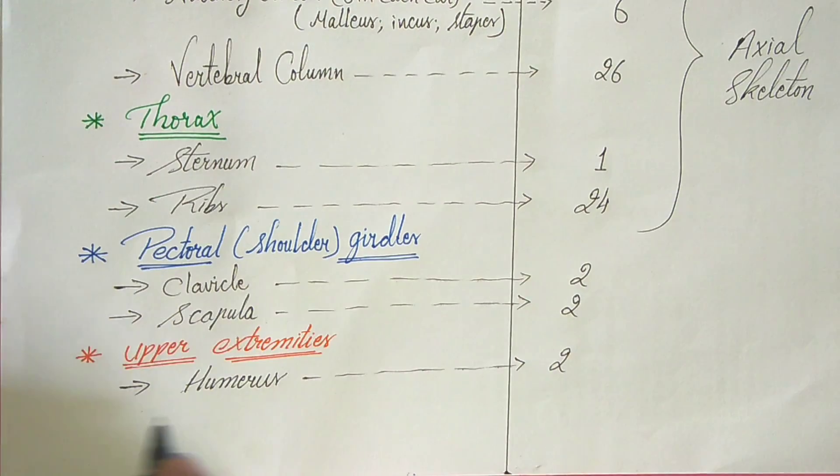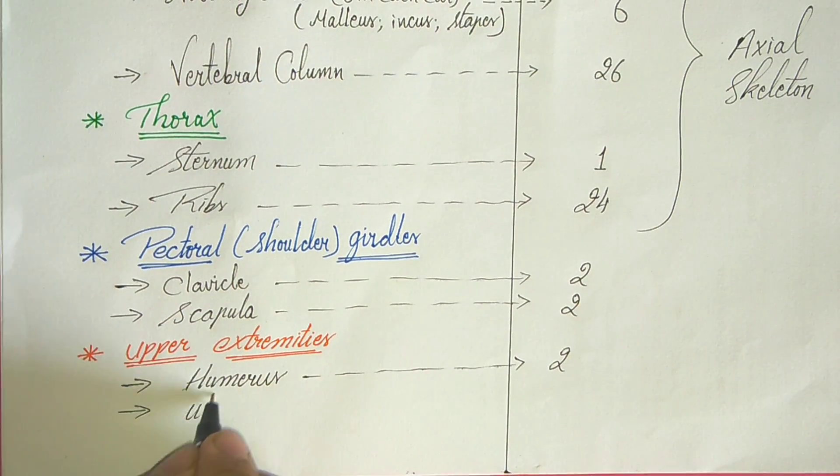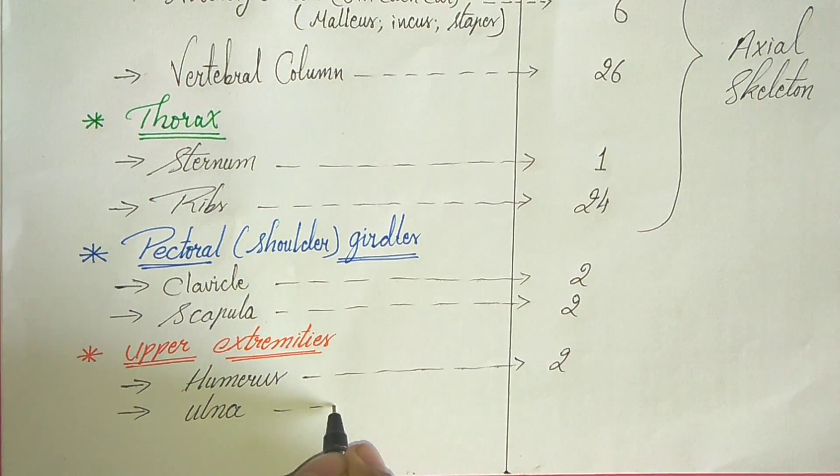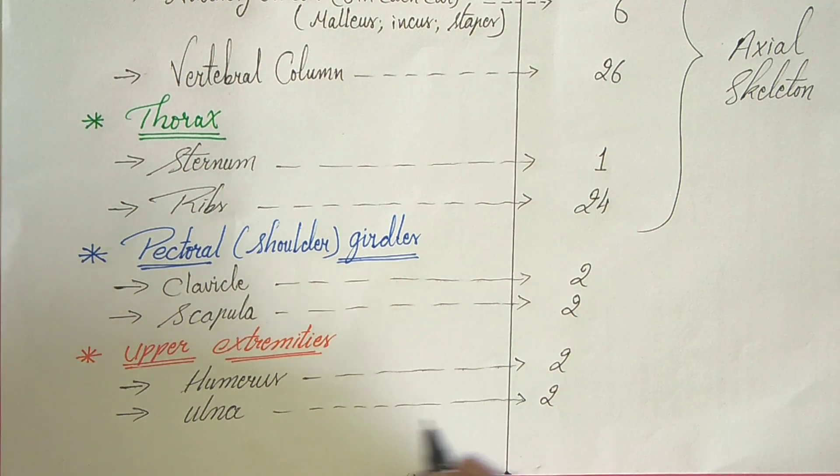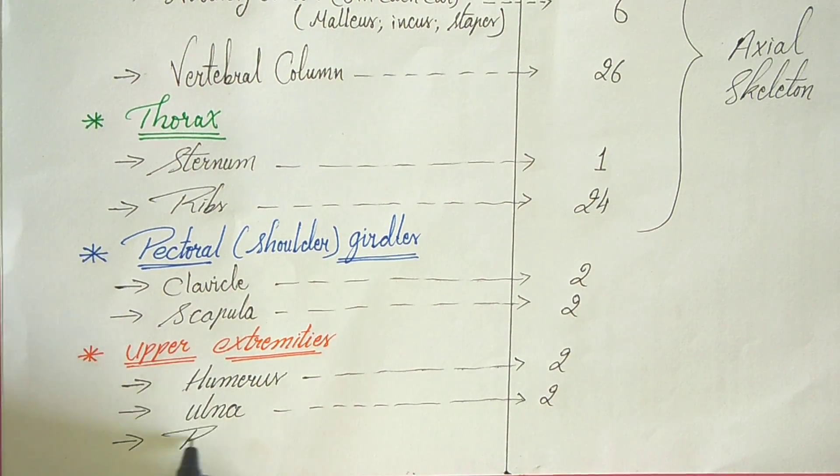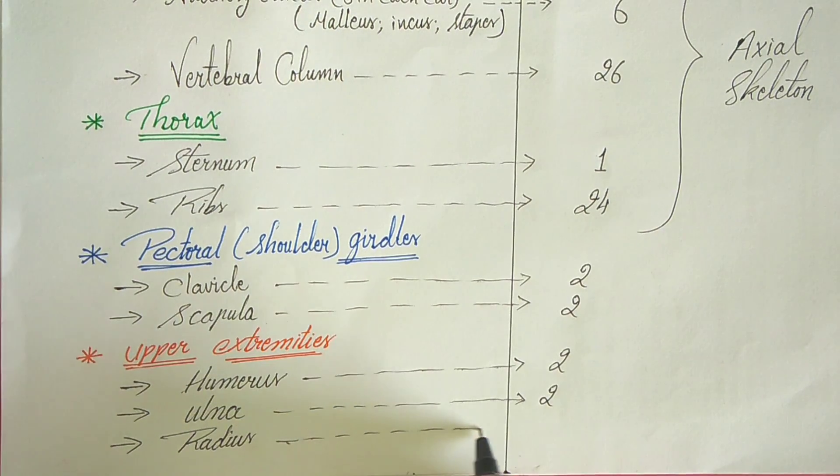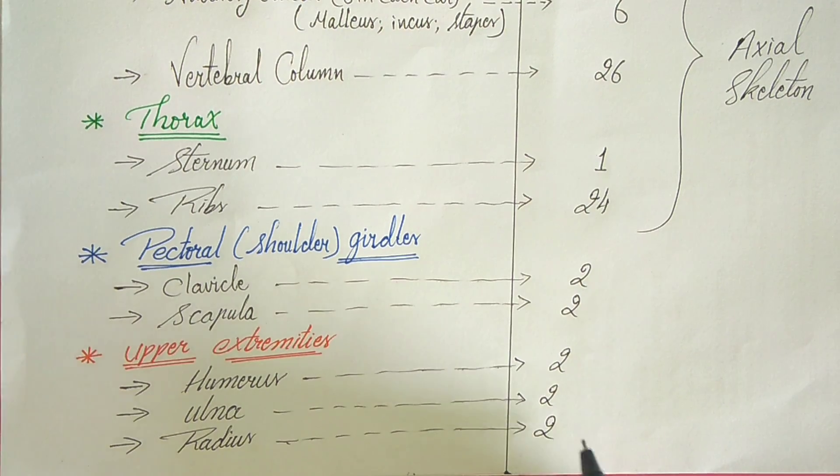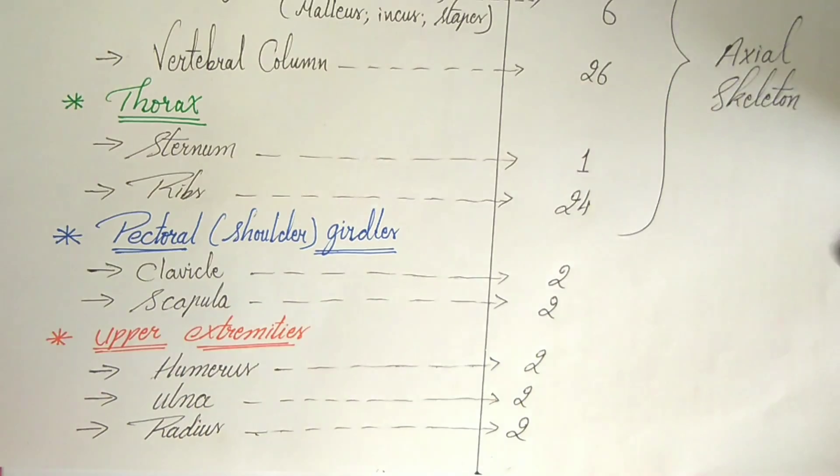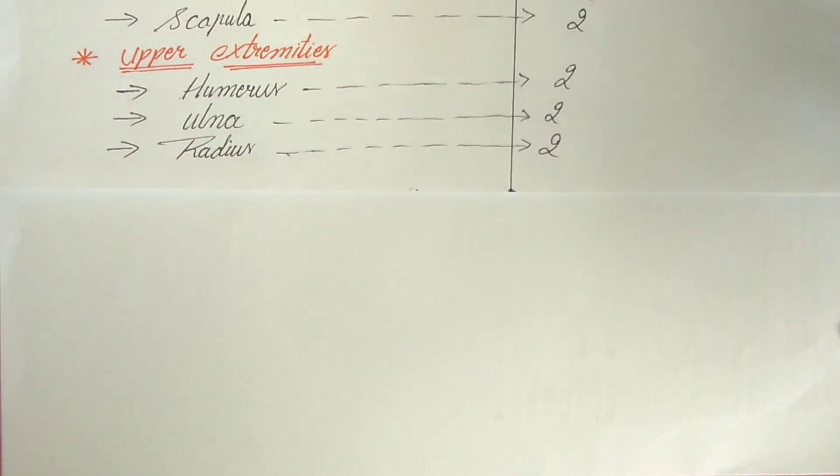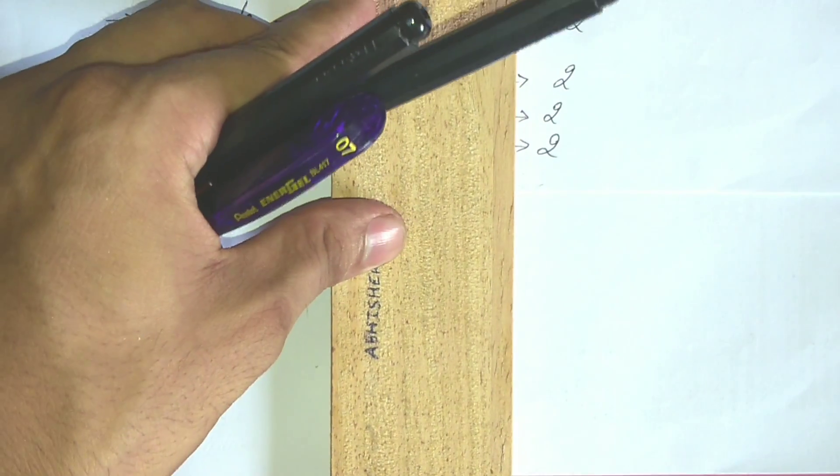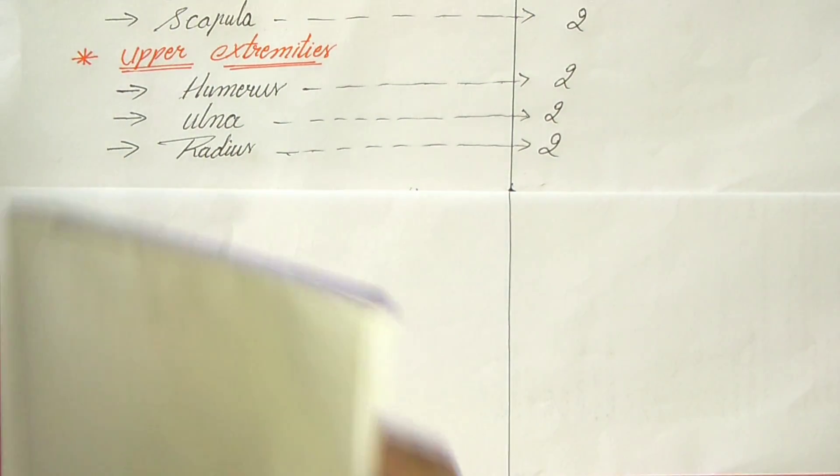In upper extremities, humerus, two humerus are present, two ulna are present, two ulna bones, and radius, which is also two in number. We will extend the line downward.